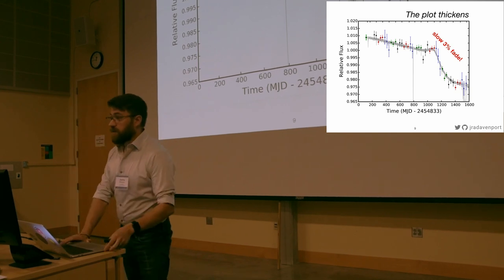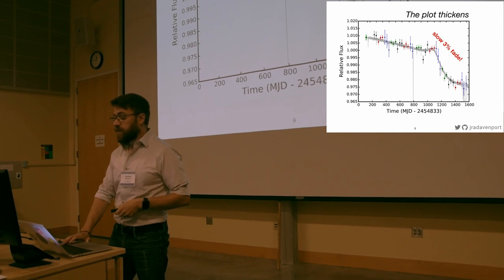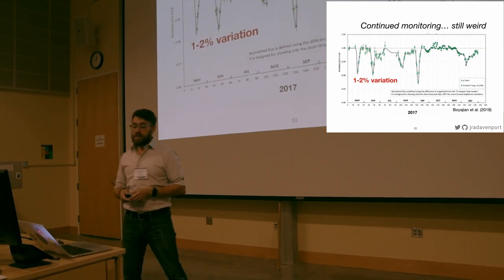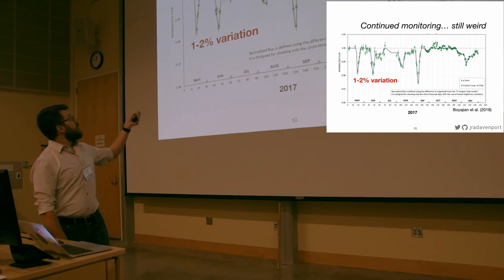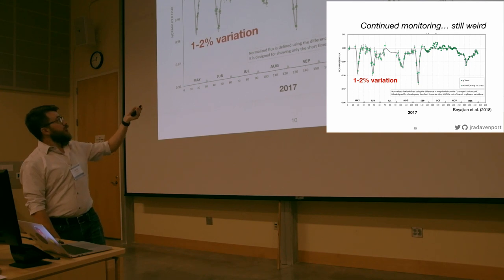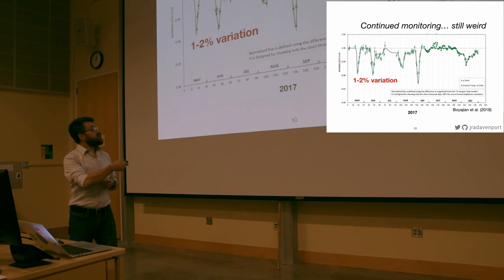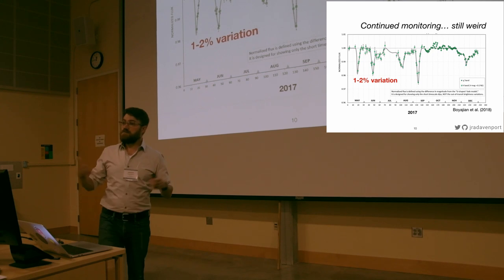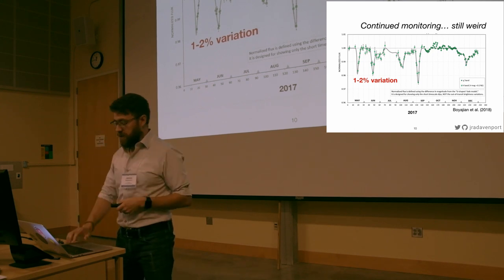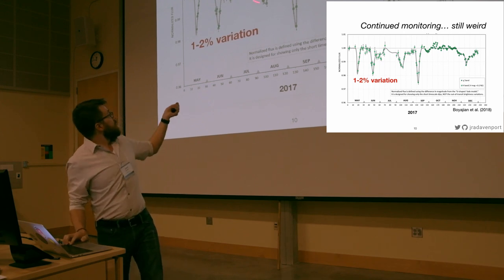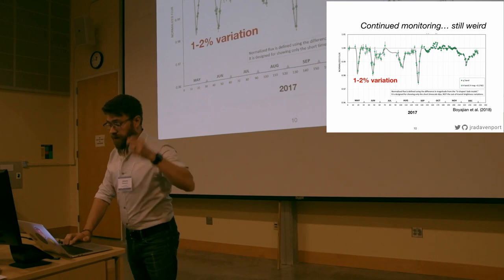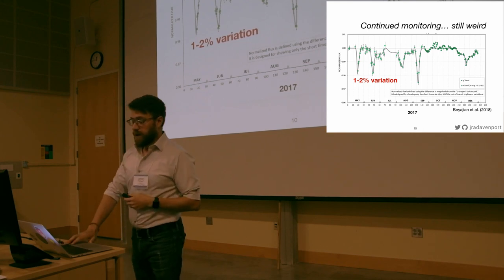Once this was realized, a slew of publications and popular science articles came out, and continued monitoring has been happening on the ground. Here's an example from Tabby's follow-up paper in 2018. From ground-based monitoring, it's less dramatic, maybe less enticing than the 15, 20 percent dips we saw in Kepler, but it's no less puzzling. One to two percent variations like this on an F star are unexplainable from standard stellar evolution models. There's nothing that this star should be doing that should cause it to vary like this with repeated durations.